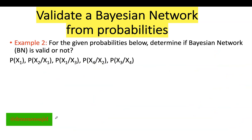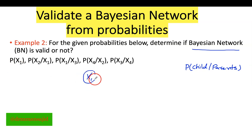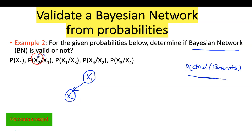In the second example, it is asking the same thing — determine if the Bayesian network is valid or not given this system of probabilities. The rule is still child given that the parents. Starting: X1 is alone with no parents. Next, P(X2 | X1) — X1 is the parent and X2 is the child, so we draw X1 going to X2. Then P(X1 | X3) — X3 is the parent and X1 is the child, so X3 goes into X1.